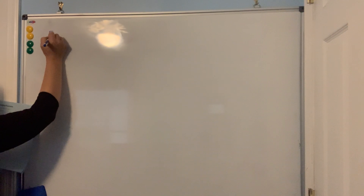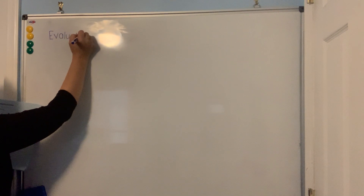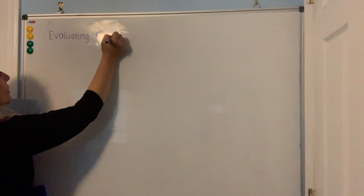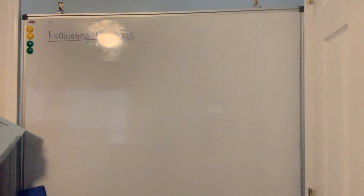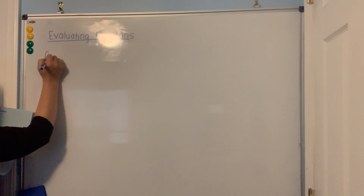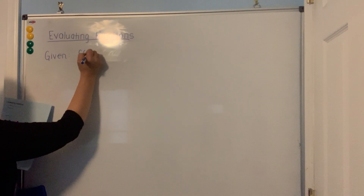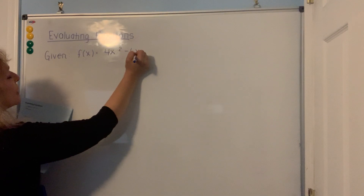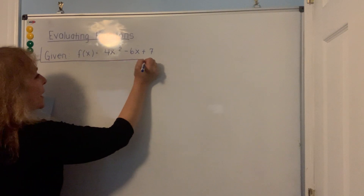We are on the topic of evaluating functions. For this entire page, you are given that f of x is equal to the trinomial 4x squared minus 6x plus 7. That will not change for the entire page.